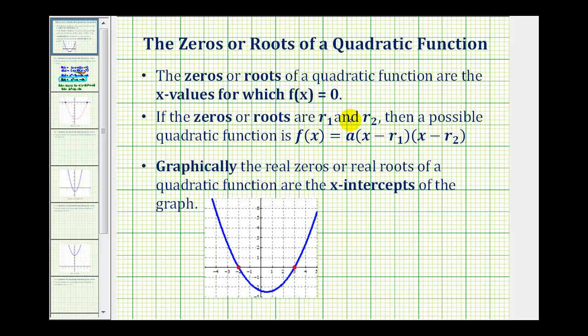Again, where r₁ and r₂ are the zeros. And we can also check our answer graphically if the given zeros are real. If we graph the function, the x-intercepts will be the zeros of the function, again, as long as the zeros are real.